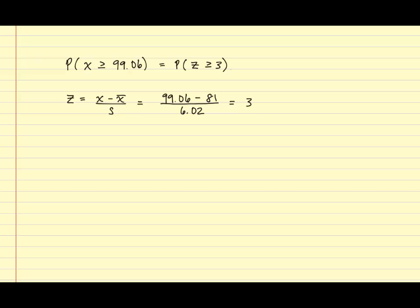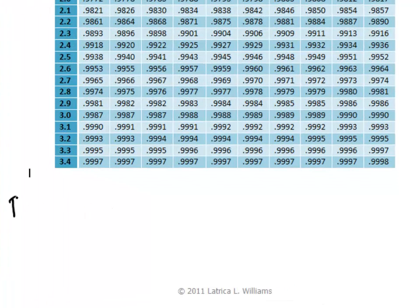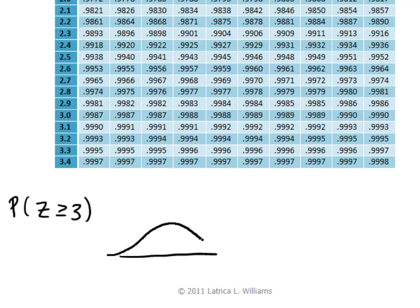So, using this information along with the normal table, we can now find the probability. We're trying to find the probability that z is greater than or equal to 3. So again, I'm going to draw this out to show how it looks on the scale.